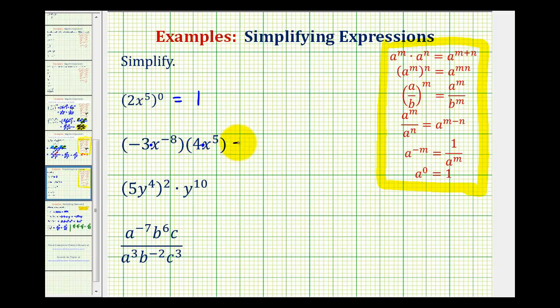So if it's helpful, we can write this as negative three times four times x to the negative eighth times x to the fifth. This is called the commutative property of multiplication.